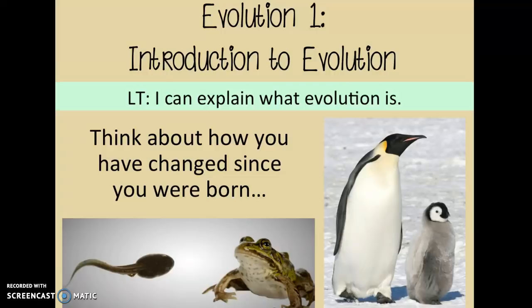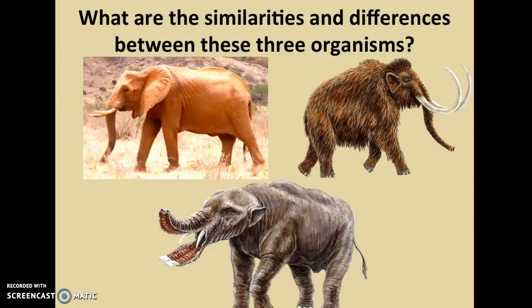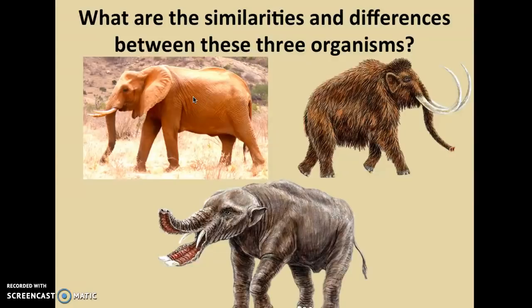Look at these pictures. What are the similarities and differences between these three organisms? Take a moment to record that in your notebook. We have an elephant, a woolly mammoth, and a paleomastodon. The elephant has descended from the woolly mammoth, and the woolly mammoth descended from the paleomastodon — making the paleomastodon an ancestor to the woolly mammoth, and the woolly mammoth an ancestor to the elephant. They have a basic body structure in common: tusks, a long trunk, ears, a curvature to their back, a tail, and forelegs.